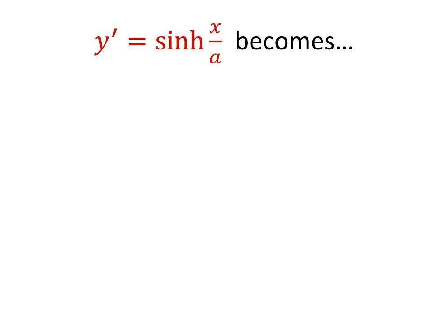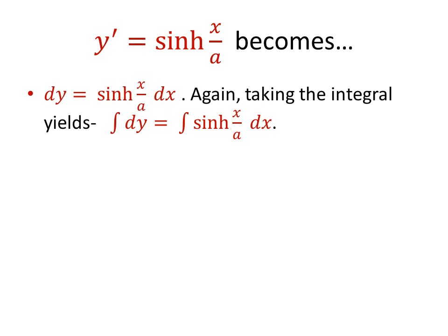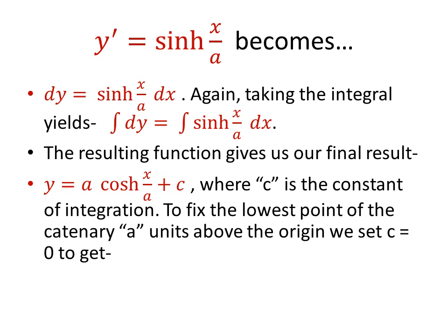Now, we have the first derivative of y with respect to x is equal to the hyperbolic sine of x over A, which becomes upon integrating again, as you see here, giving us our final result. y is equal to A times the hyperbolic cosine of x over A plus some constant C.